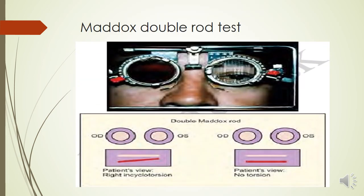In the double Maddox rod test, with full refractive correction, one eye is given a red Maddox rod and the other a white Maddox rod. The patient is asked whether two lines are seen and how they are inclined. If there is no torsional deviation, both lines appear parallel. If tilted, a torsional deviation is present. If the line tilts downward to the right it indicates right in-cyclo torsion; if to the left, right ex-cyclo torsion. The color of the tilted line identifies which eye is affected.